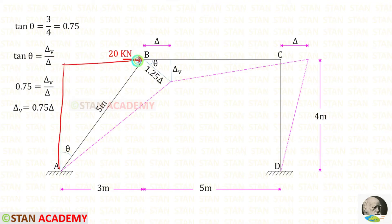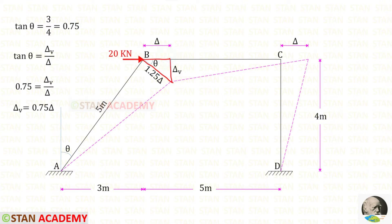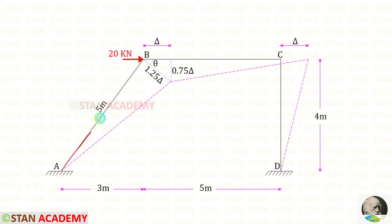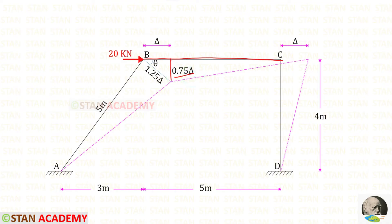Now in this triangle, let us find tan theta, which will be equal to 3 upon 4, giving us 0.75. In the displacement triangle, tan theta is equal to delta-V upon delta. Instead of tan theta, we can apply 0.75. Finally, we get the relation delta-V is equal to 0.75 delta. So for the inclined member AB, we consider 1.25 delta; for the horizontal member BC, we consider 0.75 delta; and for the vertical member CD, we consider delta.